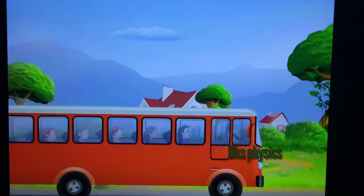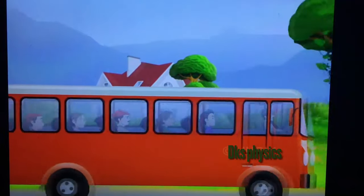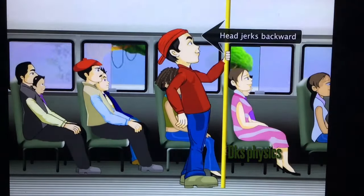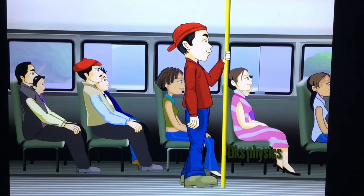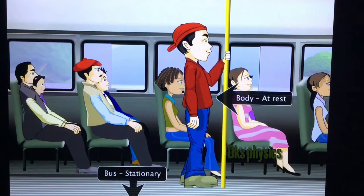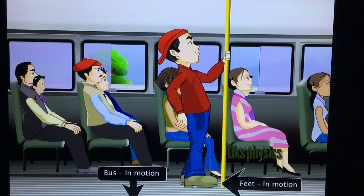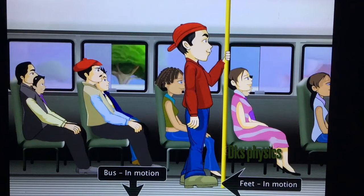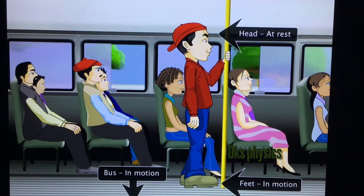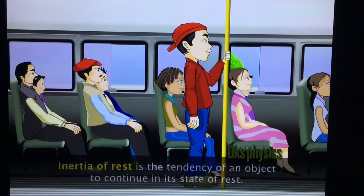As the bus starts to move, your head is pushed backwards. When the bus was stationary, your body was at rest. When the bus started moving, your feet, which touched the floor of the bus, started moving simultaneously. But your head exhibited a type of inertia called inertia of rest. Inertia of rest is the tendency of an object to continue in its state of rest.